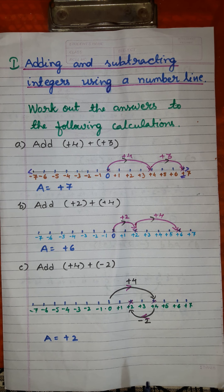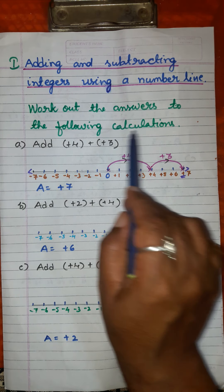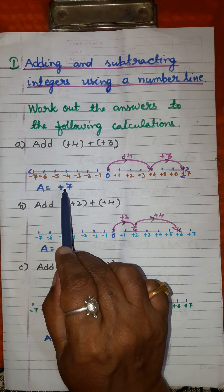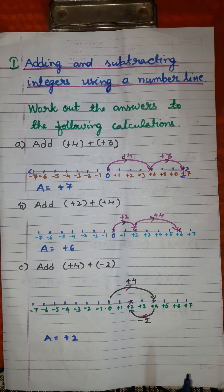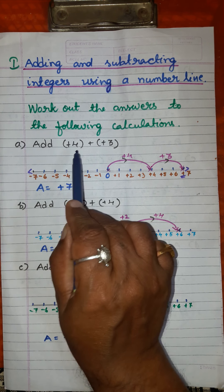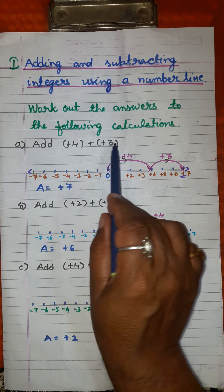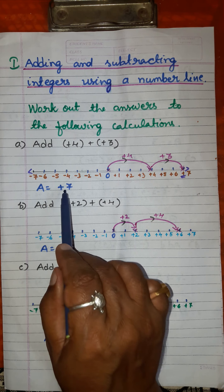You may think why there is a need for drawing a number line when you know the answer. Because the problem instructs you to work out the answer using the number line, you must draw it. If you arrive at the answer without drawing the number line, you may not get the marks. Manually, 4 plus 3 is 7 — you can get the answer in a fraction of a second — but you have to draw the number line; there is no alternative.